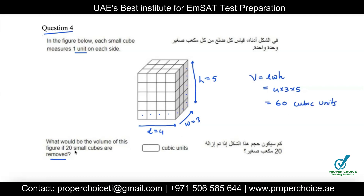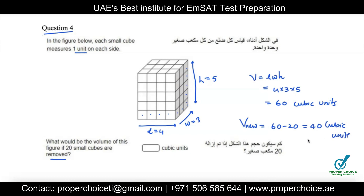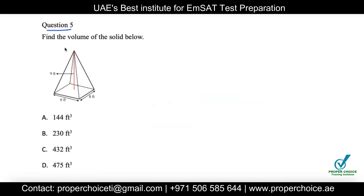The question asks for the volume after 20 small cubes are removed. Since the solid has 60 unit cubes total, removing 20 gives 60 − 20 = 40 cubic units.